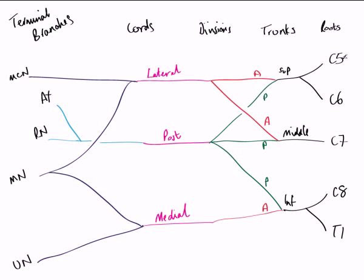To briefly recap: we have the five roots — C5, C6, C7, C8, and T1 — which give rise to three trunks. Each of the trunks gives off an anterior and posterior division, and these ultimately form the three cords. It is from these cords that the terminal branches are formed. For some of you this level of detail will be enough and you can stop the video, but for the next couple of minutes I want to detail the remaining motor and sensory nerves also associated with the brachial plexus. These nerves come specifically from the roots, the superior trunk, or the lateral, posterior, and medial cord.